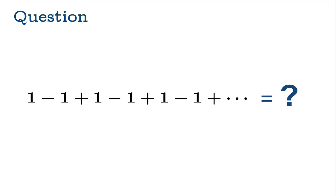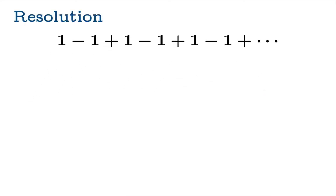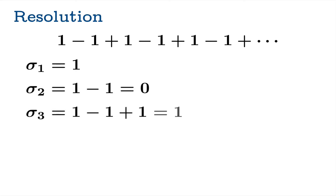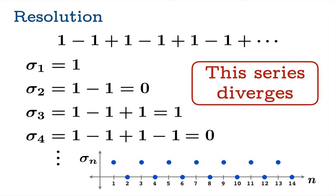Let's return to the question we started with: what is the sum of one minus one plus one minus one, etc.? Clearly, we should look at the sequence of partial sums. The sequence of partial sums alternates between one and zero. Now we see the problem — this sequence diverges, and therefore the series diverges. So it doesn't equal anything. It's not that it equals zero, or one, or two, or negative three — it actually doesn't equal anything, because by definition the series diverges.